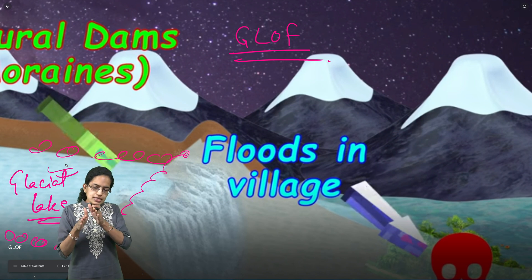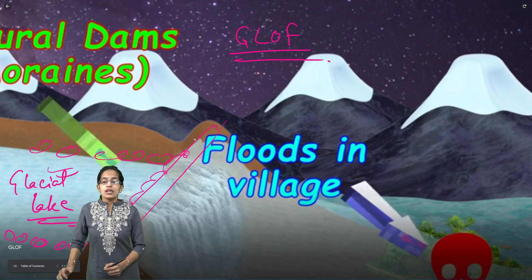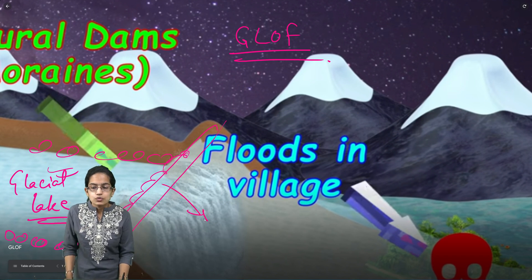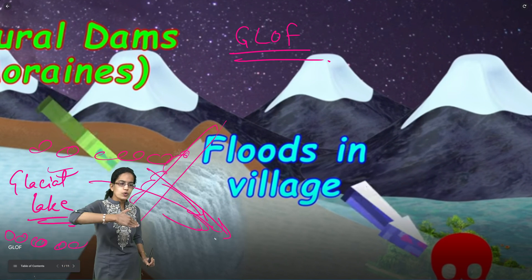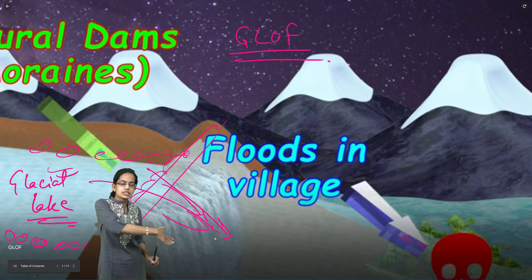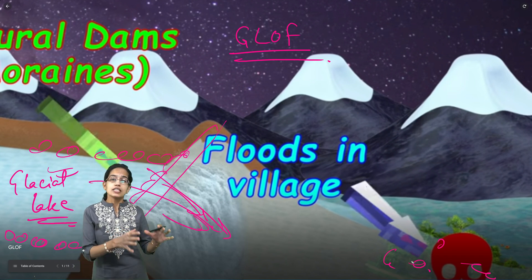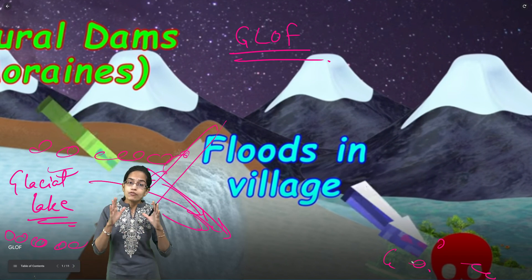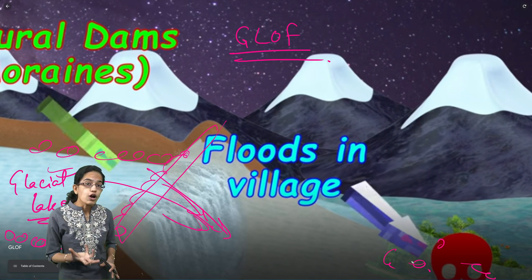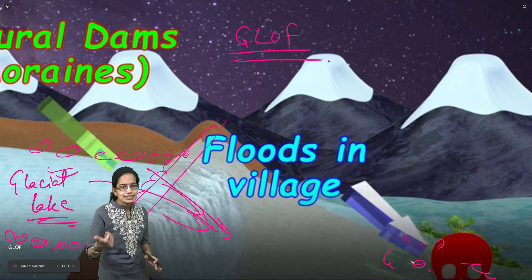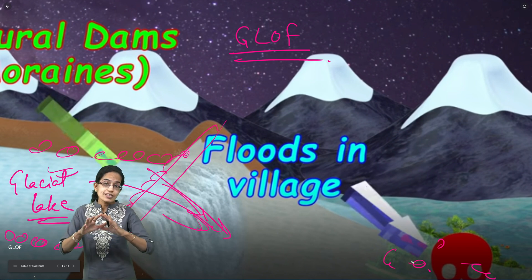This moraine boundary is naturally created, and once it breaks, the glacial water flows into downstream regions, causing severe floods in villages in the lower areas — flash flood conditions because of the breaking of moraines. A GLOF event can occur due to an earthquake or an avalanche.